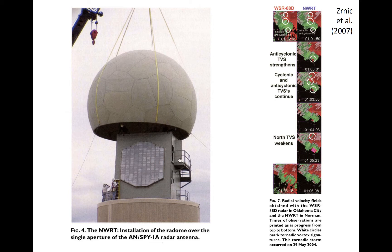An example of Doppler velocities seen by this phased array radar compared to those detected using the WSR-88D in the same storm are seen at far right. In the top panel, the same supercell is observed almost simultaneously — these two panels are three seconds apart. Over the next five minutes, the phased array radar captures a volume of the supercell four times before the WSR-88D again scans the cell at a low elevation angle.